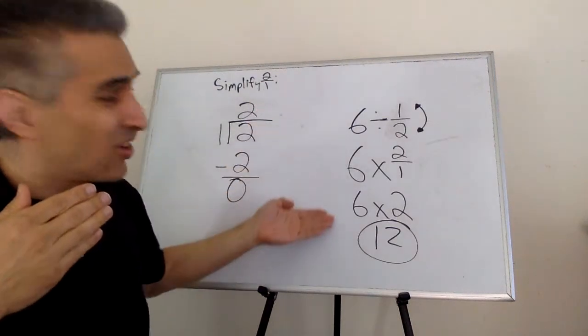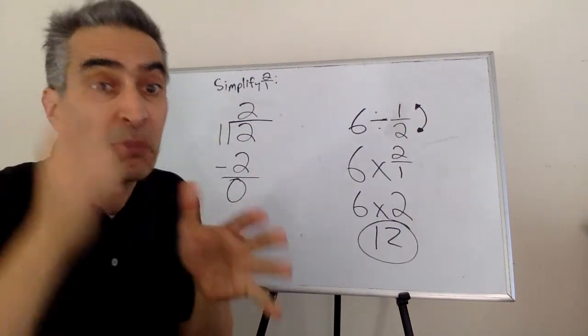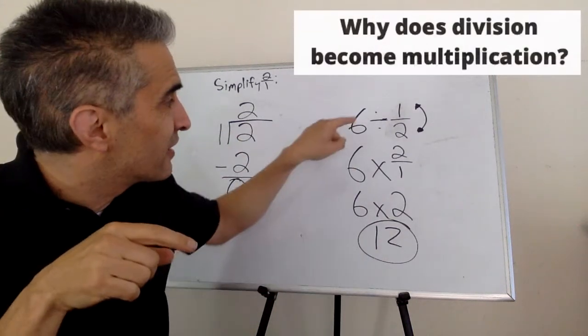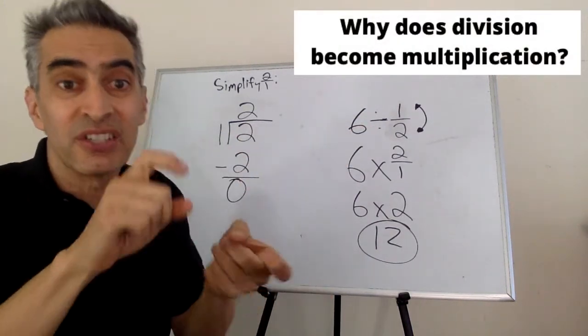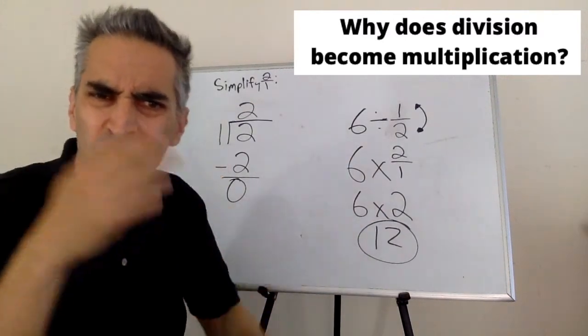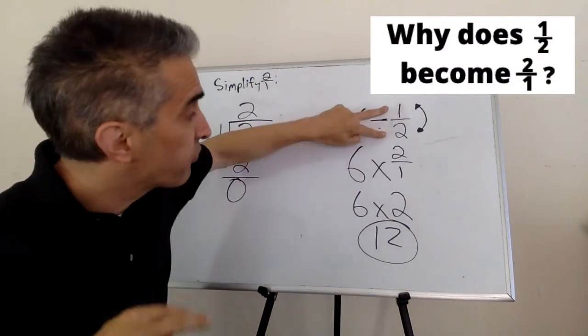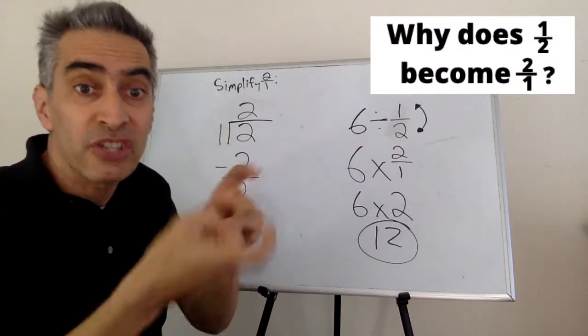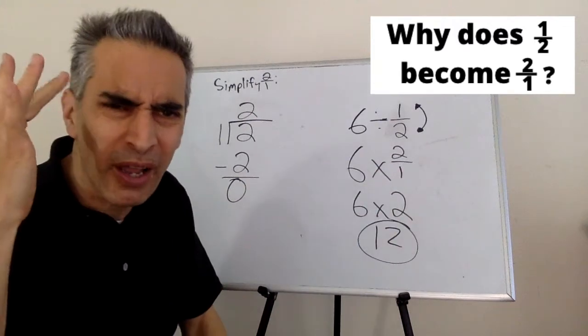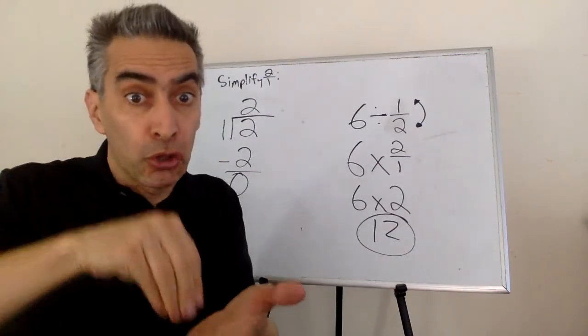Some people see this process and they can't understand it. They become confused. This division sign becomes multiplication. Well, why does that happen? And this one-half flips and becomes two over one. Why does that happen? Keep watching and you will learn why.